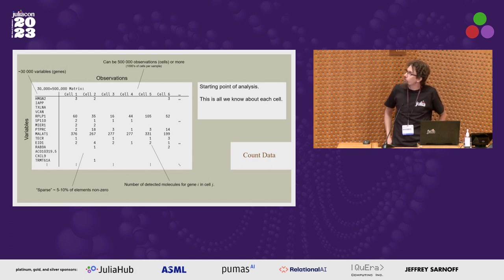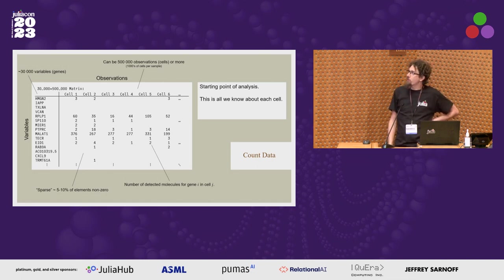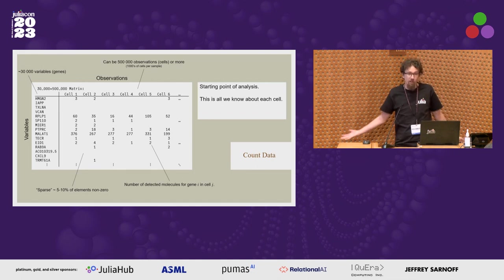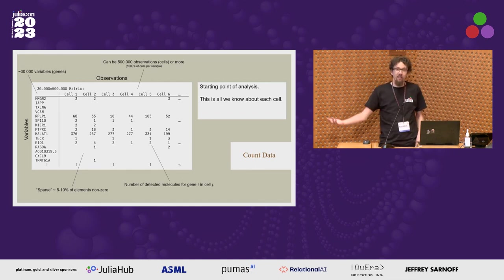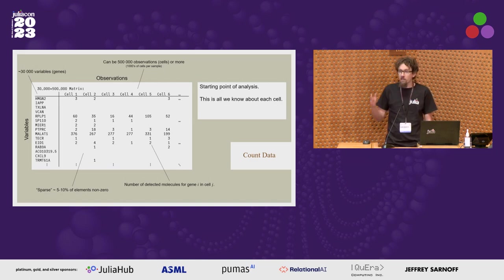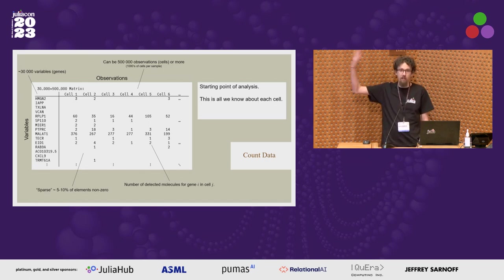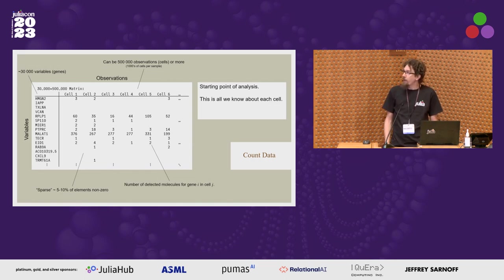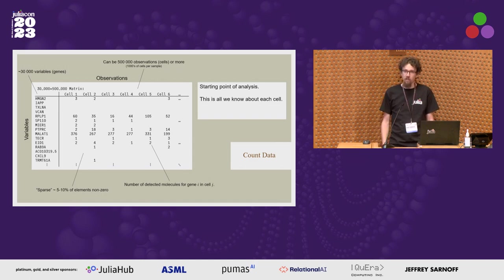That's how we get the data, and this is where my work starts. The result is one big, rather sparse matrix with integer counts — maybe 30,000 genes, and the number of cells depends on how much data you're collecting. We're now seeing datasets with 500,000 cells or more, making this a rather large matrix. When I say sparse, I mean maybe five to ten percent of the data is non-zero.